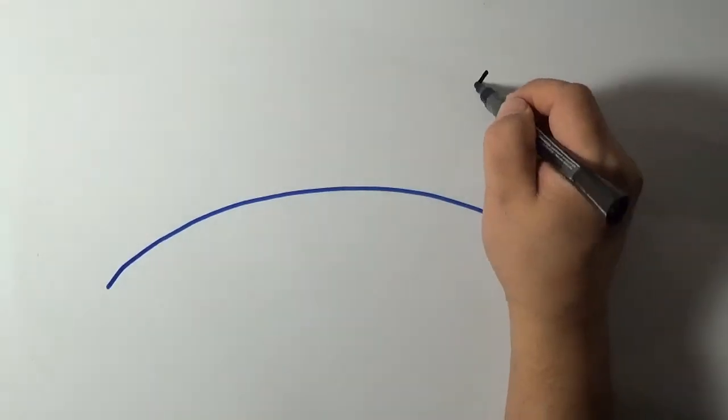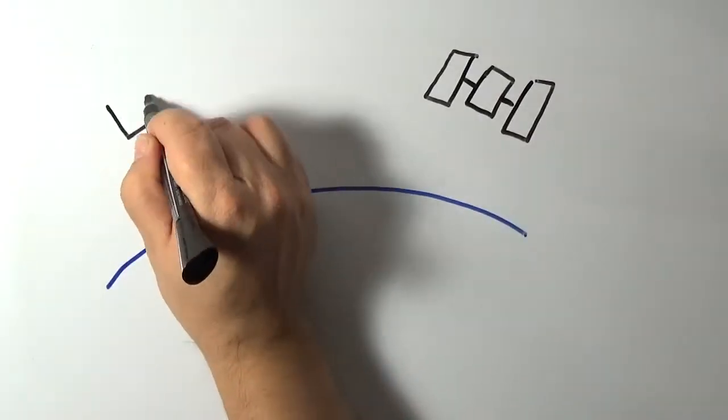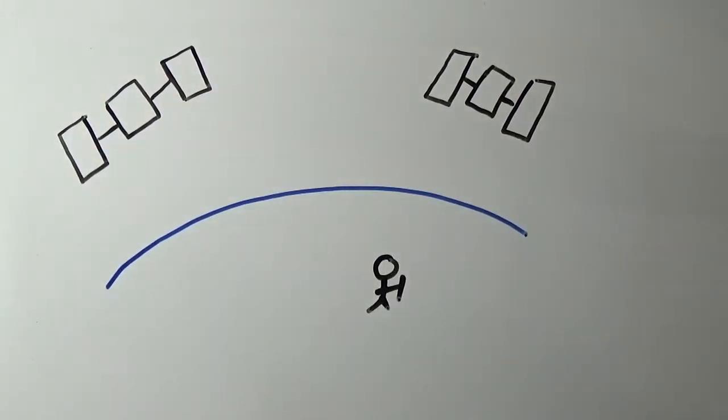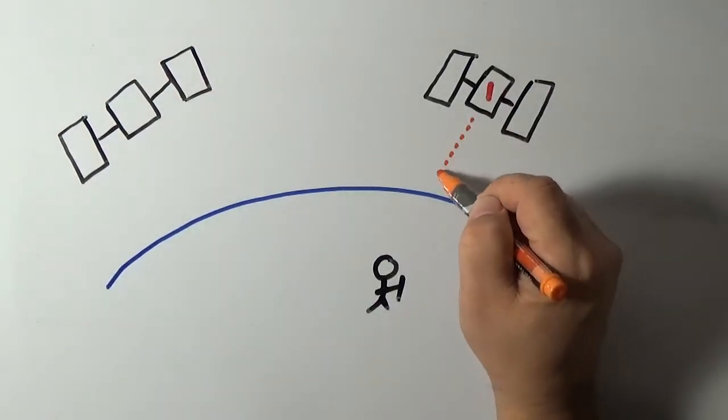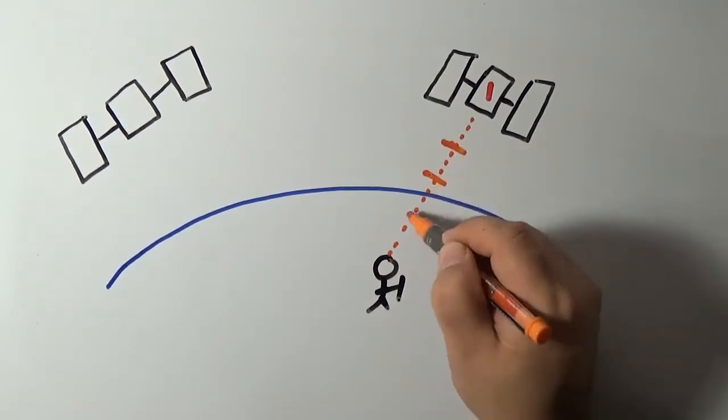The GPS system is based on a constellation of 32 satellites orbiting the Earth. When you're navigating, your phone receives signals from many of these satellites at one time.